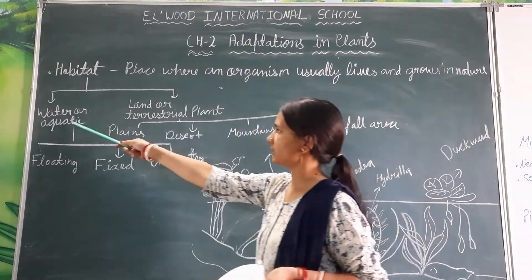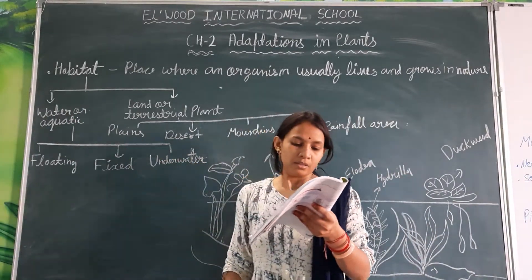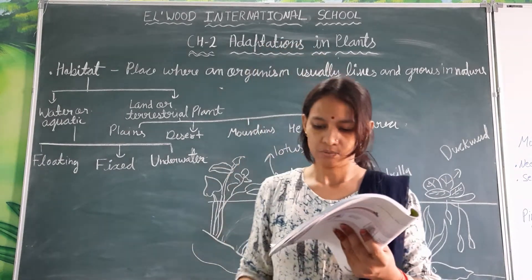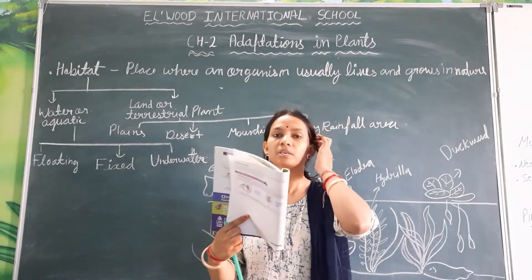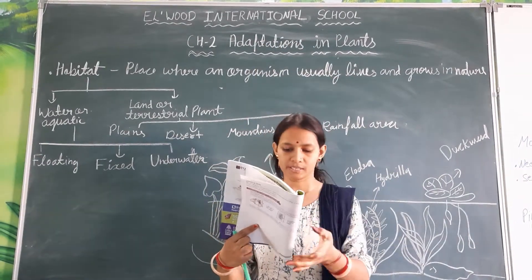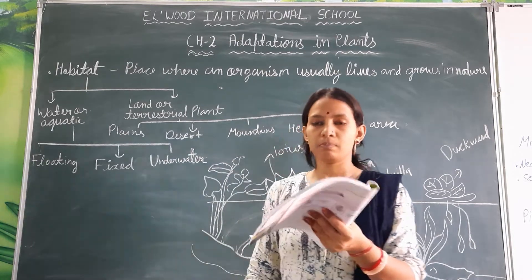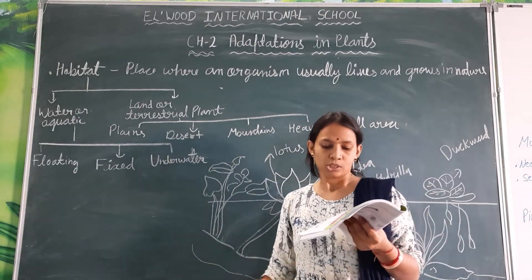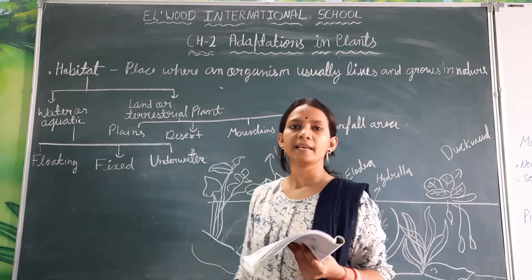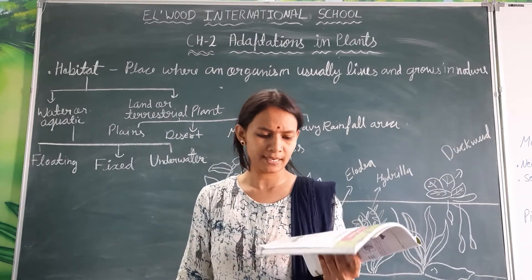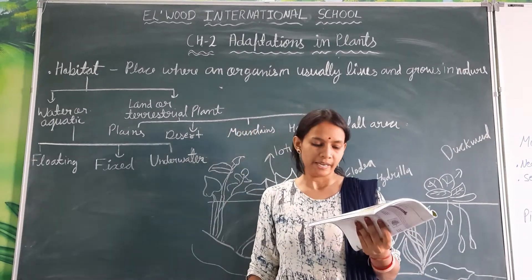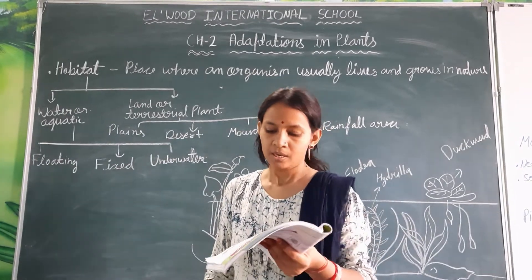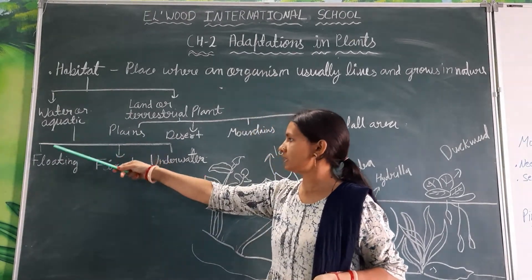What are water and aquatic plants? The plants that grow in water are called aquatic plants. Water covers about 71% of the earth's surface. Aquatic plants may grow in salt water or fresh water — salt water like oceans and seas, and fresh water like lakes, ponds, rivers, and streams. There are three types of aquatic plants.